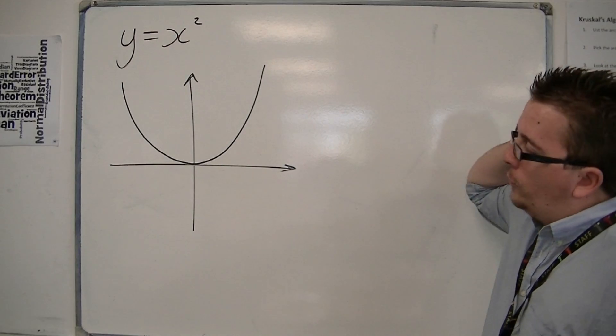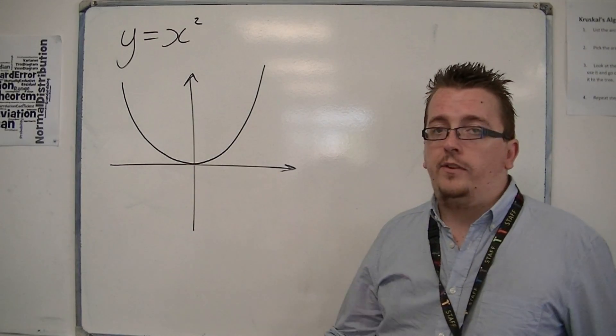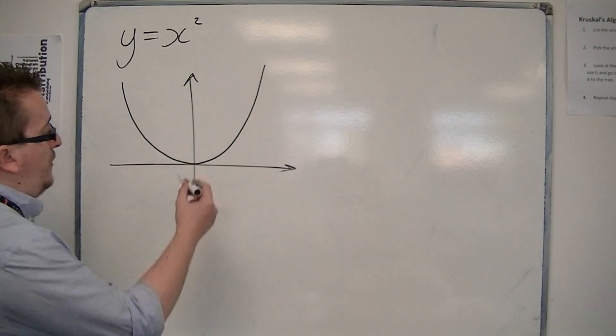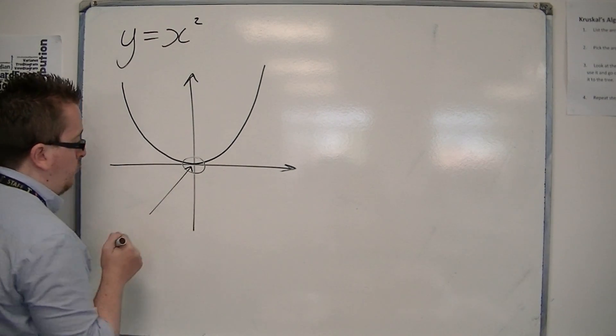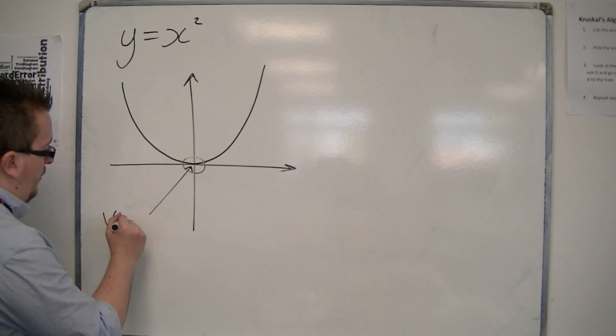So this is y equals x squared. It has this line of symmetry for the y-axis, and it also has this minimum point here. The minimum point of a parabola is known as the vertex.